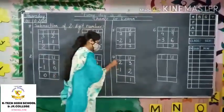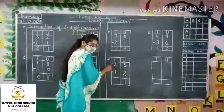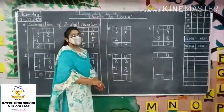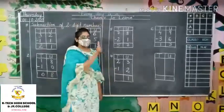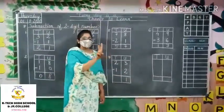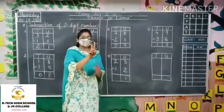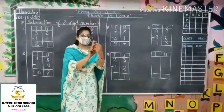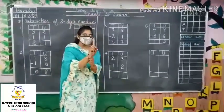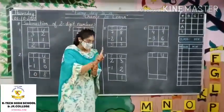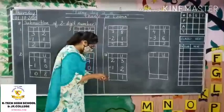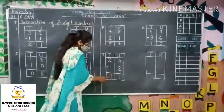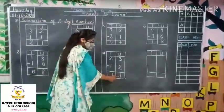Now come to the tens part: 2 minus 1. Remove 2 fingers — 1 and 2. Now minus 1 finger. How many fingers are remaining? 1. So the answer is 1. That is 11.